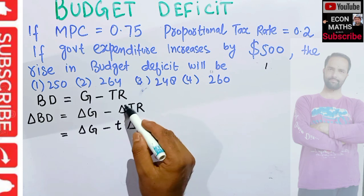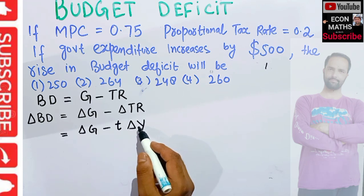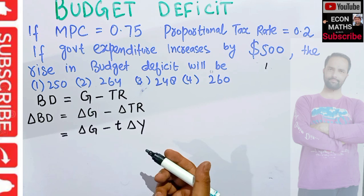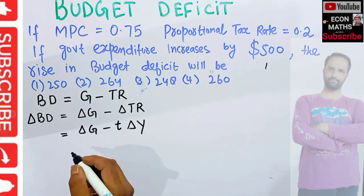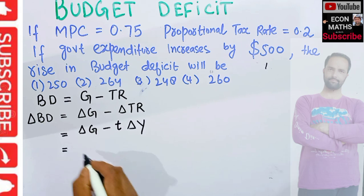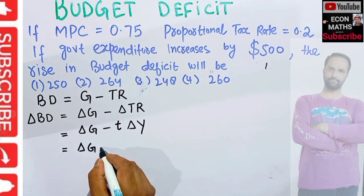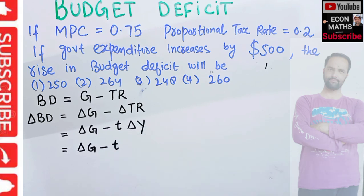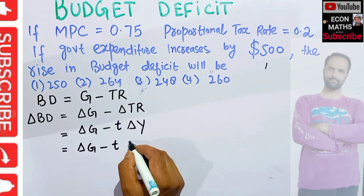Change in tax revenue will depend upon the level of change in income times the tax rate — that is the proportional tax rate. We can write it as: change in government expenditure minus tax rate times change in income.